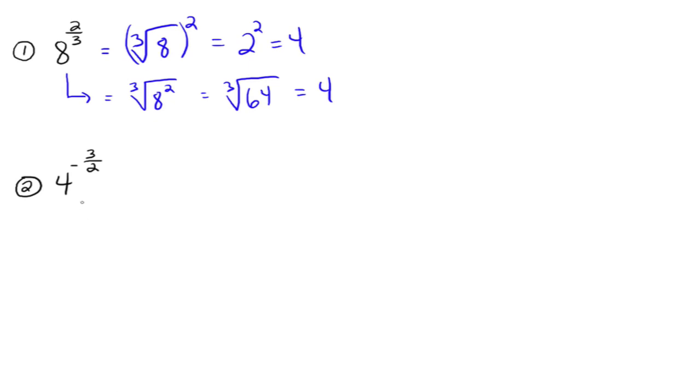What about number 2? We've got a negative exponent. Well, we need to write that with a positive exponent: 1 over 4 to the 3 halves. And then that goes to 1 over the square root of 4 cubed. The square root of 4 is 2, and 2 cubed is 8. So 4 to the negative 3 halves is the same thing as 1 eighth.